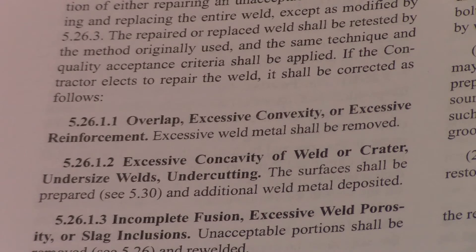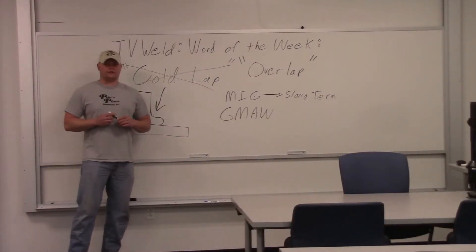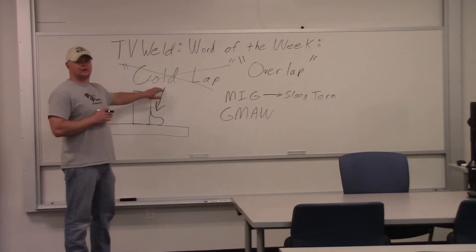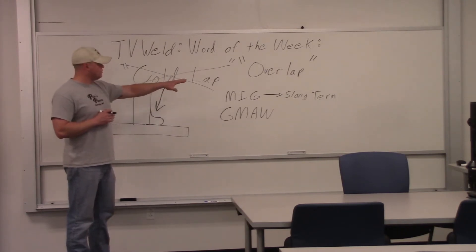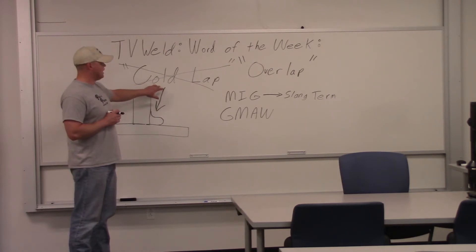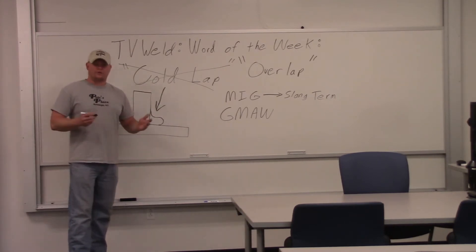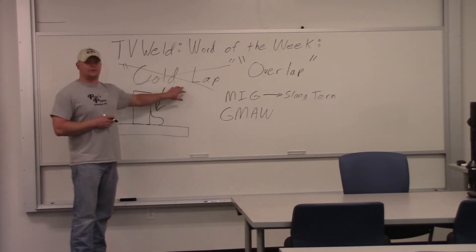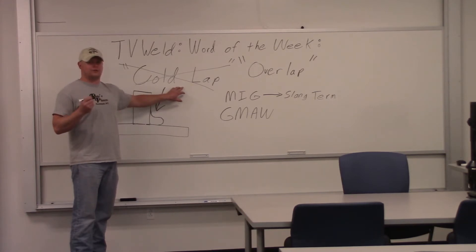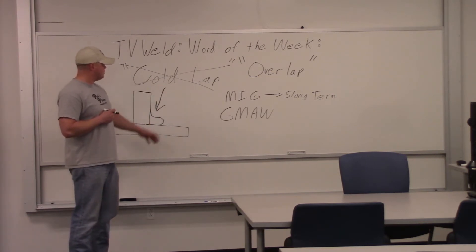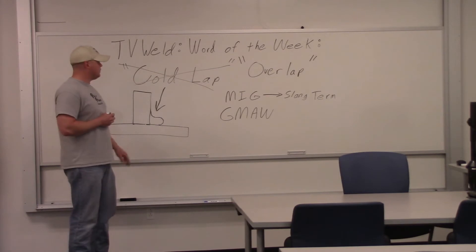So let's take a look at what slang terms are. Cold lap is used all the time in the welding industry. The correct term is overlap. So why would it be important to know what cold lap is if overlap is the correct term? If you're taking an AWS CWI exam — Certified Welding Inspector test — they will put slang terms as choices in the questions. You need to know the proper term, not just the slang terms. The other reason it's important to know slang terms is because they're used a lot in the welding industry. If you don't know what cold lap is and somebody asks you what the defect is, you're going to look foolish. People use cold lap all the time.